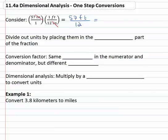And then we could divide 57 by 12, probably using a calculator. We get 4.75 and we still have the units of feet on there.